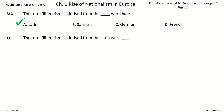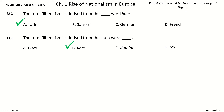Question 6. The term liberalism is derived from the Latin word dash. The options are: novo, liber, domino, rex. And the answer is liber. So, the term liberalism is derived from the Latin word liber.